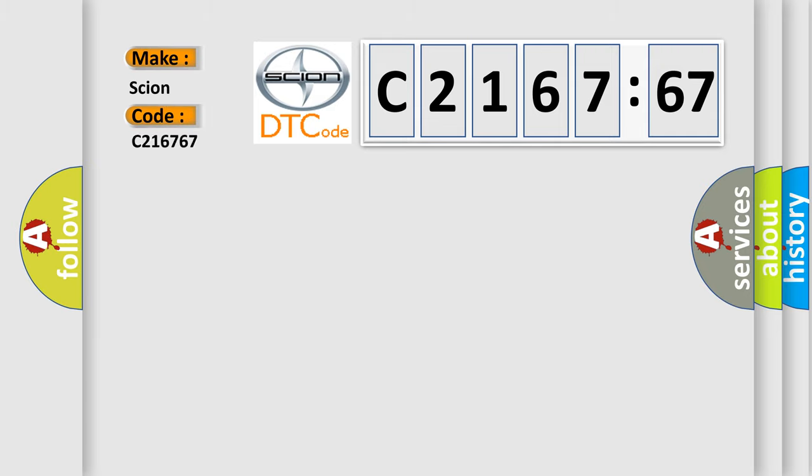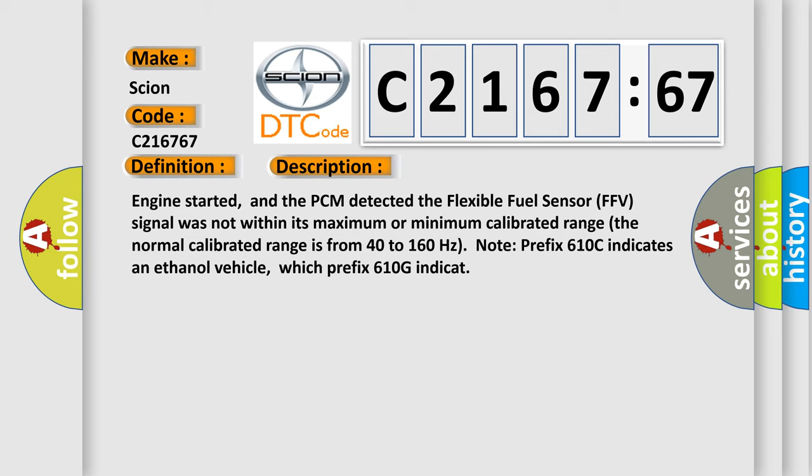So, what does the diagnostic trouble code C2167:67 interpret specifically for Scion car manufacturers? The basic definition is flexible fuel sensor circuit malfunction.